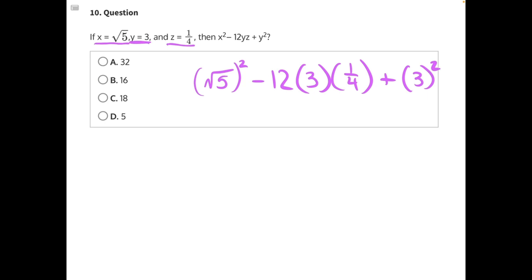And now we can simplify the expression. A radical and an exponent will cancel each other out, especially since this is a square root. Square root and a squared will cancel out, leaving us with just 5 minus 12 times 3 will give us 36. 36 times 1/4 is the same thing as 36 divided by 4, which will give us 9.